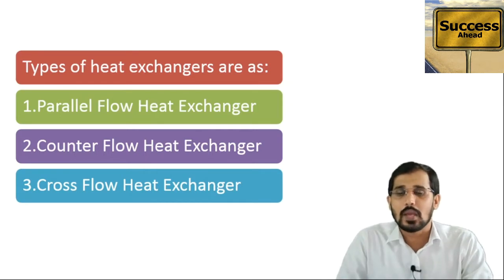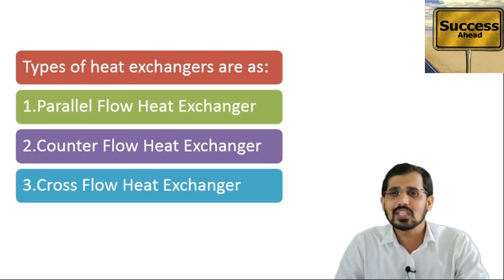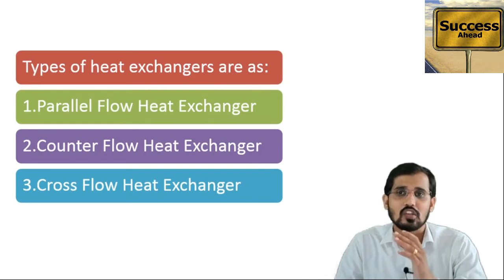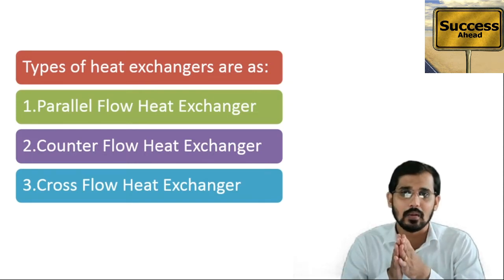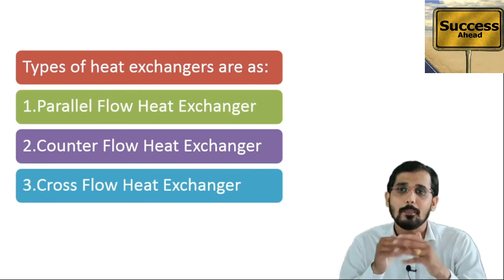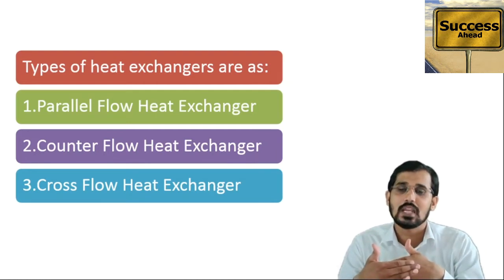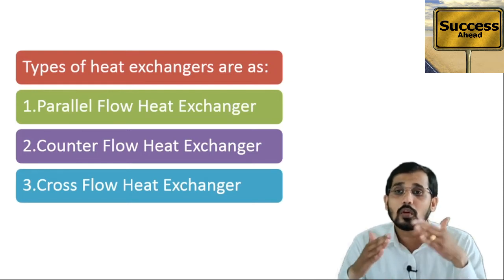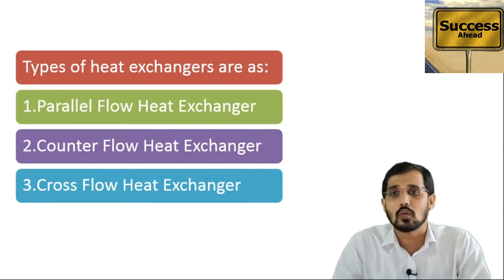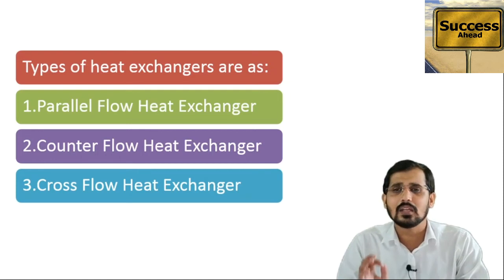In a parallel or co-current heat exchanger, there are two streams — one cold stream and one hot stream — and both streams move in the same direction. In a shell and tube heat exchanger, if the hot fluid and cold fluid are moving in the same direction, that is co-current or parallel flow. If the cold fluid and hot fluid move in opposite directions, that is counter current mode. If the cold and hot fluid cross each other, that is cross-flow. A combination of these patterns is called a hybrid heat exchanger.